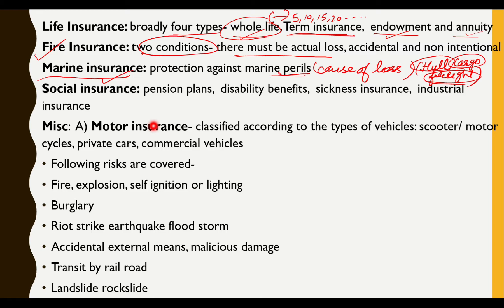Social insurance has developed to provide economic security to weaker sections of society who are unable to pay premiums for adequate insurance. Examples include pension plans, disability benefits, unemployment benefits, sickness insurance, and industrial insurance. These are various forms of social insurance. Then we have miscellaneous insurance, which covers many types of risk faced by individuals, companies, or organizations according to their specific needs.